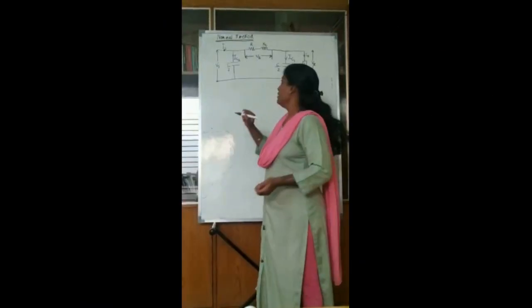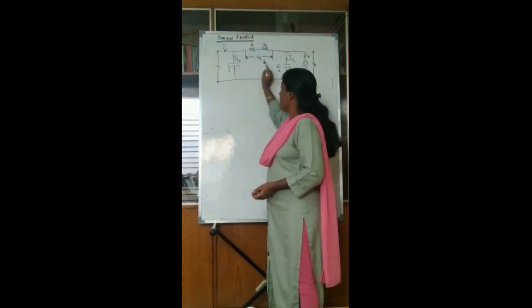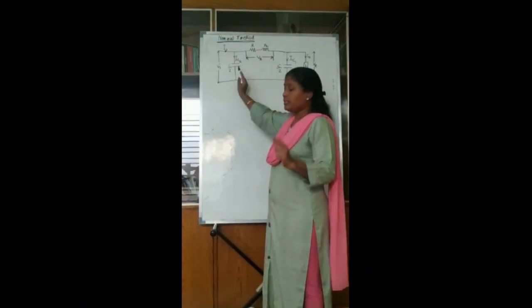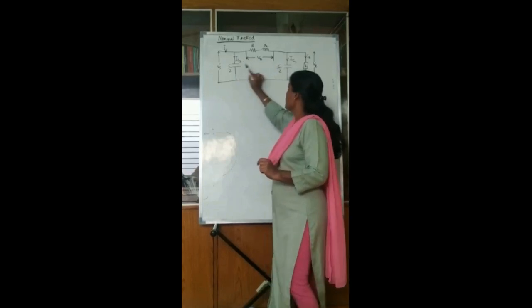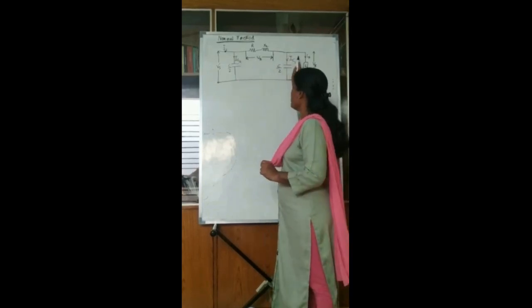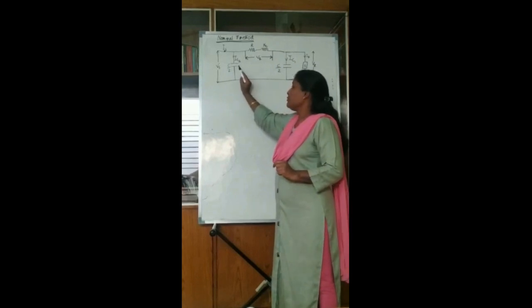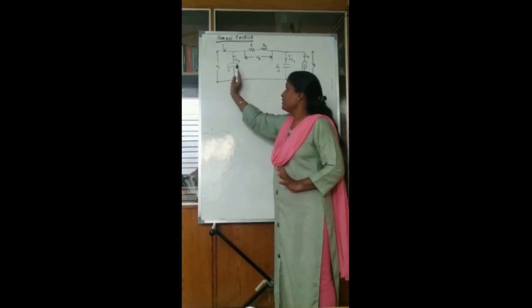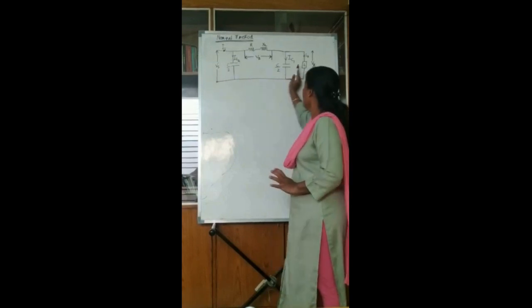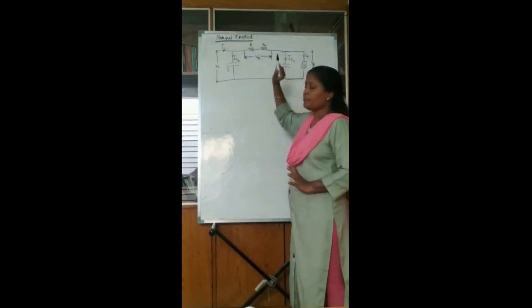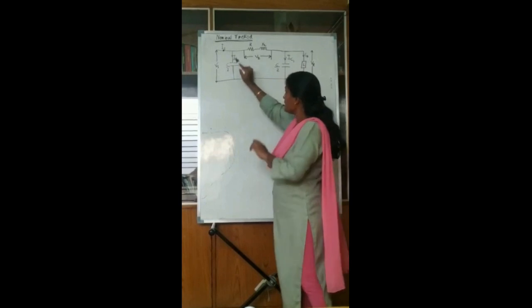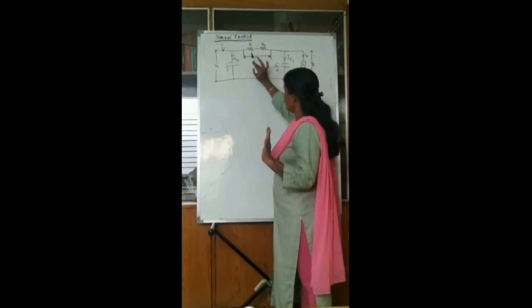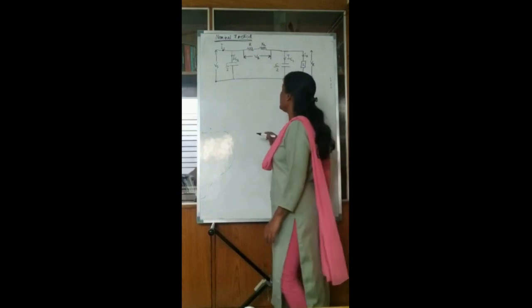The Nominal Pi Method: here this is the impedance — resistance and reactance which is at the center, and here the capacitance, this line capacitance. It is actually divided into two halves: one half is concentrated at the sending end, the other half is concentrated at the receiving end. This kind of transmission line representation is called the Nominal Pi Method.